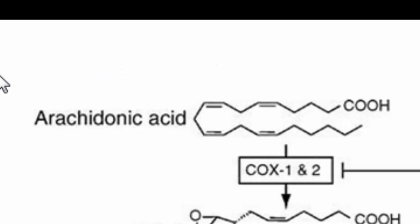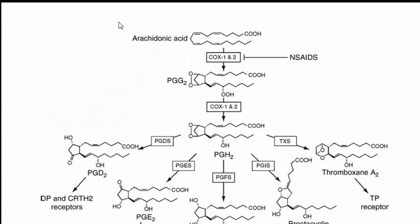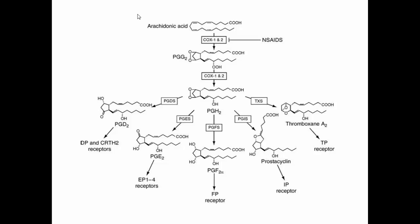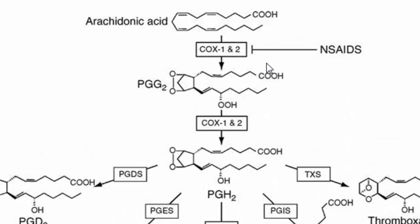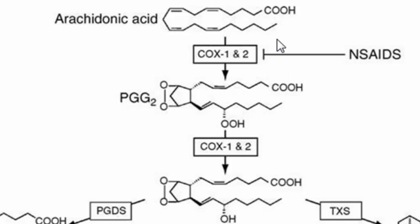Arachidonic acid is also called icosatetraenoic acid, and it is generally present in the phospholipid bilayer in the plasma membranes of cells. From there, prostaglandins are formed. These prostaglandins are oxygenated metabolites — they are formed by the oxygenation of arachidonic acid — with the help of enzymes called COX-1 and COX-2, which are two isozymes. COX stands for cyclooxygenase.